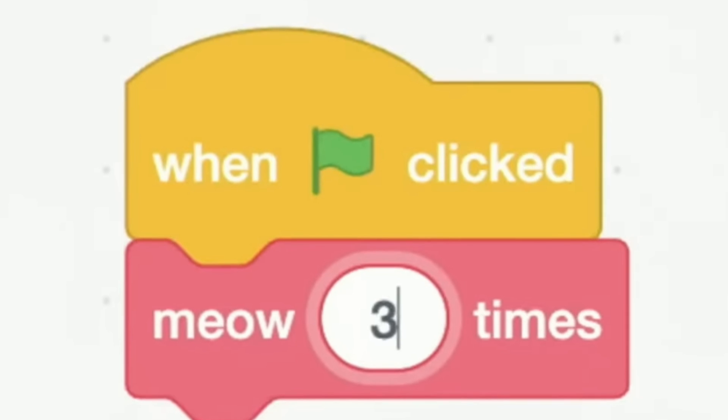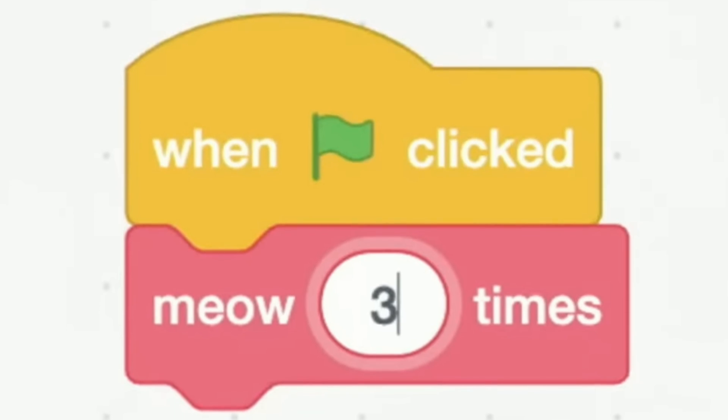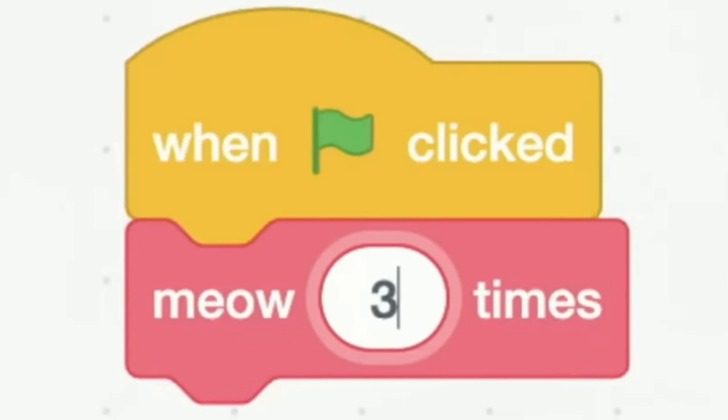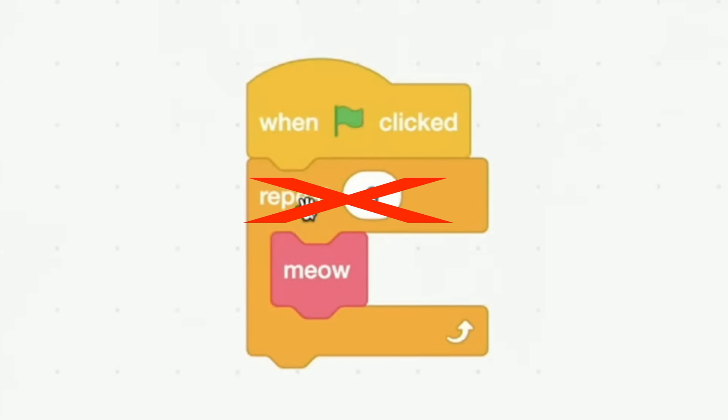Instead of the previous custom block making the cat meow once, the new code now allows you to set however many times you want the cat to meow, adding flexibility and removing the need for the loop in the main code.